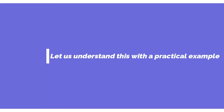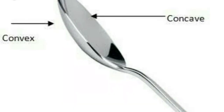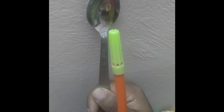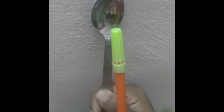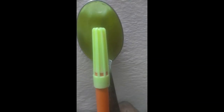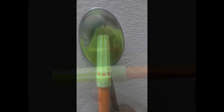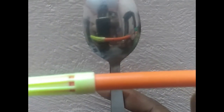Let us understand this with a practical example. Take a shining spoon — the front face represents a concave mirror and the back face represents a convex mirror. Place a sketch pen in front of the concave face of the spoon and you can see the image of the sketch upside down. Bring it closer to the concave face and you can see a magnified image that is not upside down — it is straight. Now turn the spoon to the convex face and place the sketch horizontally — you can see the entire length of the sketch pen covered in the small mirror, giving a smaller image.